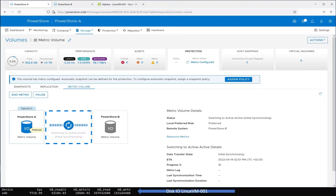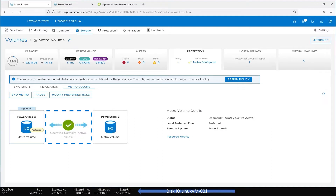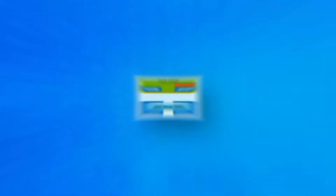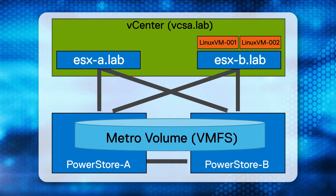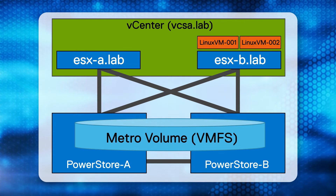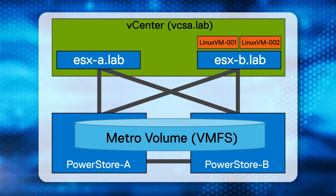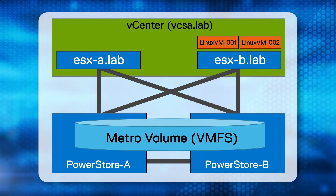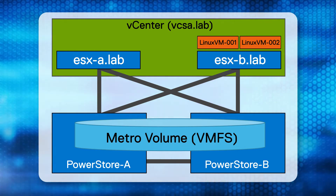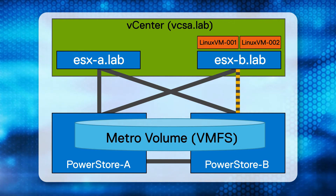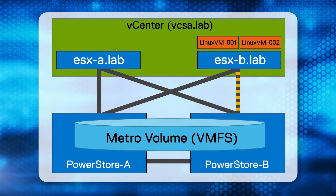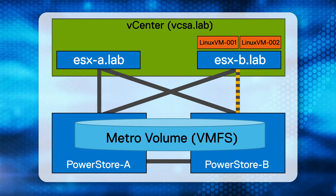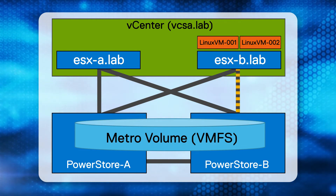When the initial sync is finished, the Metro Volume is now in sync and active-active. This means that both PowerStore systems allow active-active workloads from connected hosts to the Metro Volume. This illustration shows the current configuration. The ESX host ESX-B is using an active-optimized path to the Metro Volume served by PowerStore B, shown here by the yellow line.